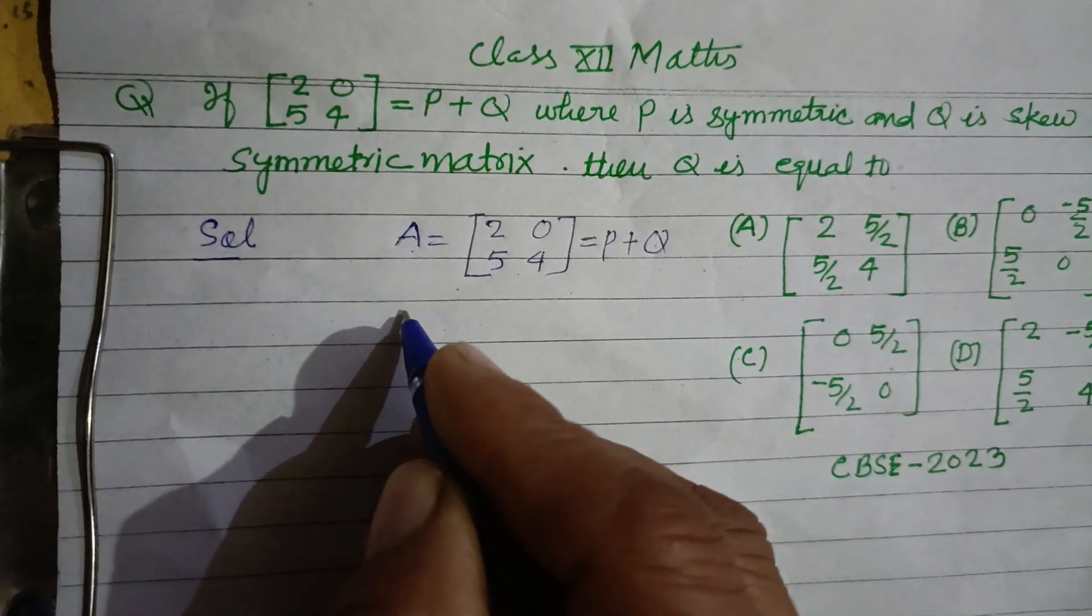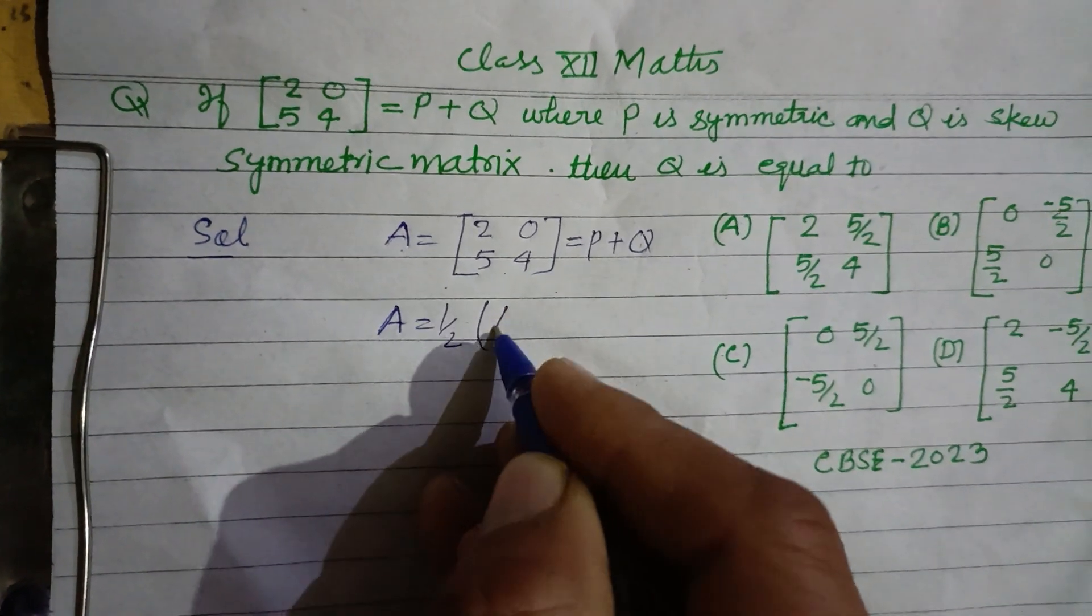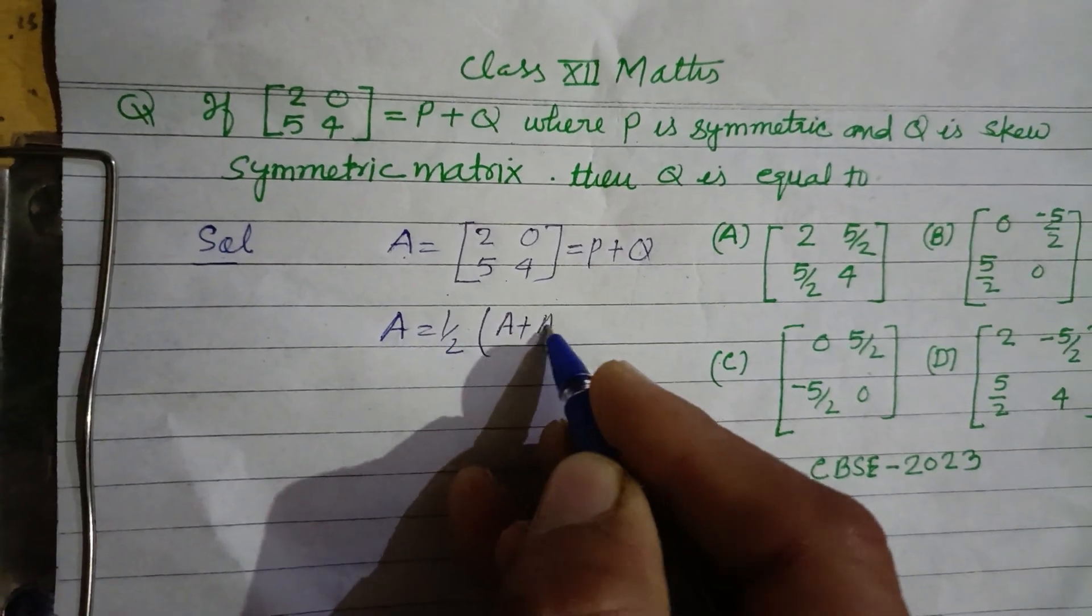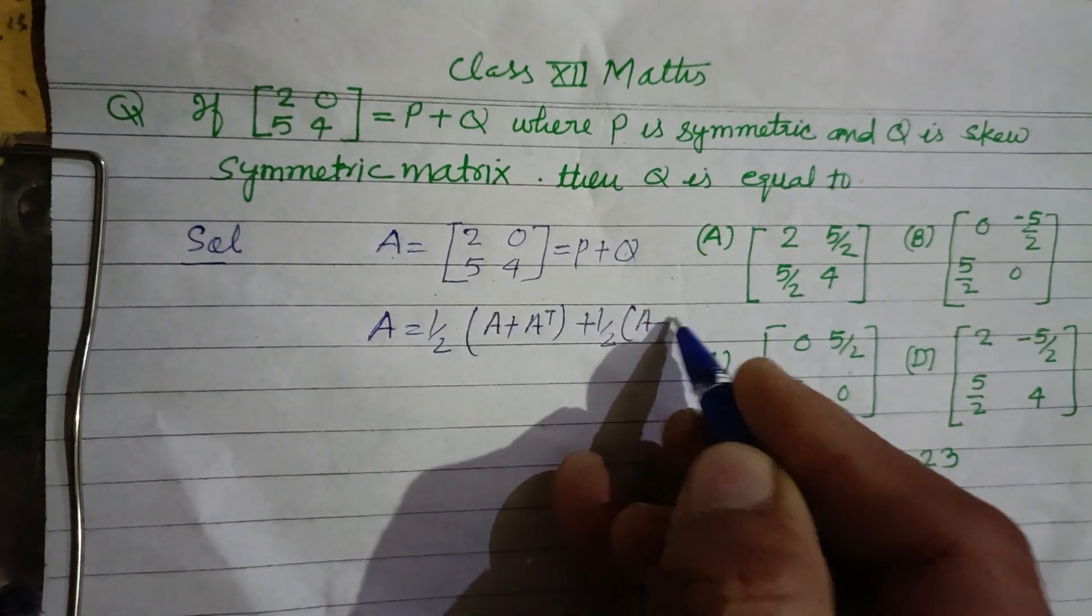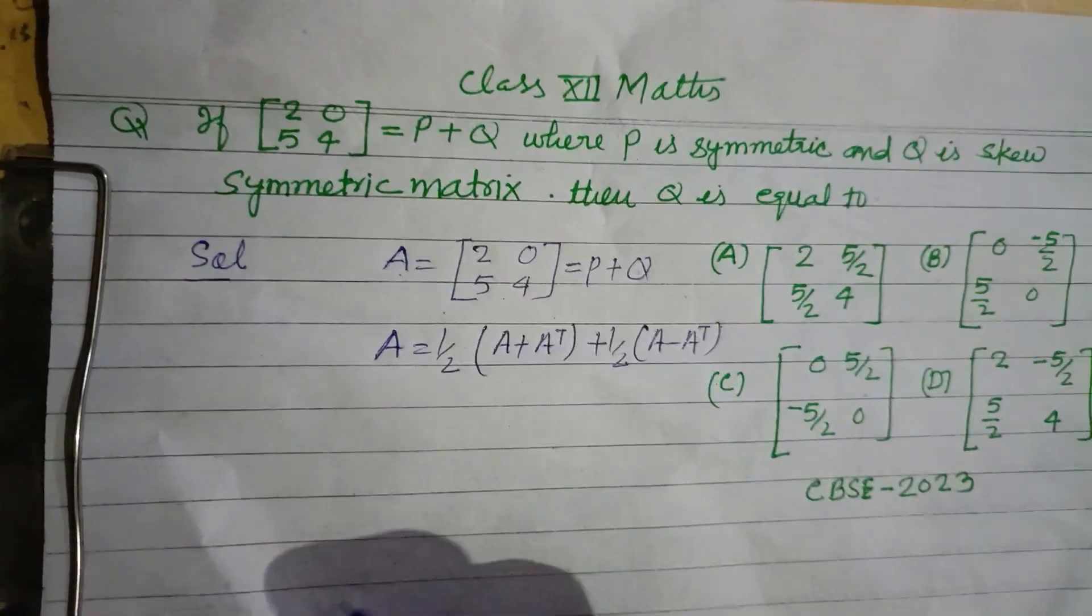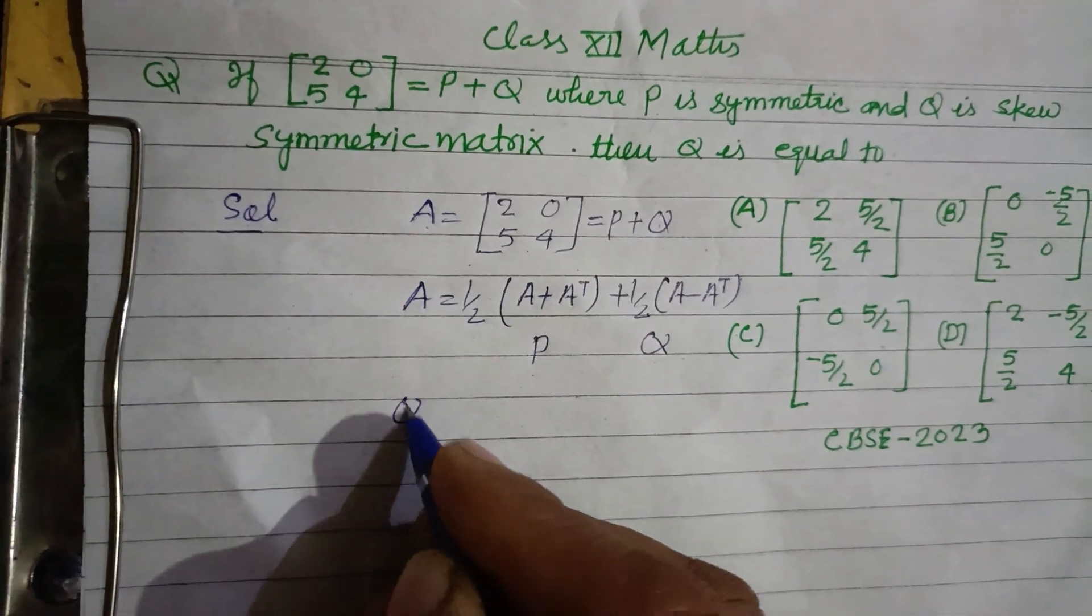Here, A equals half of (A plus A transpose) plus half of (A minus A transpose). The first term is P and the second term is Q. So Q can be taken as